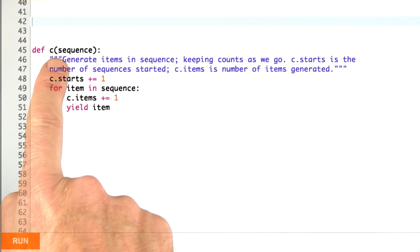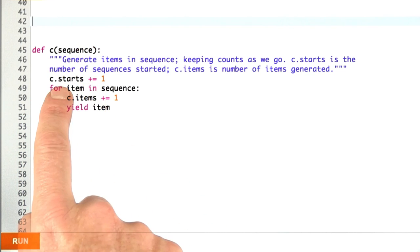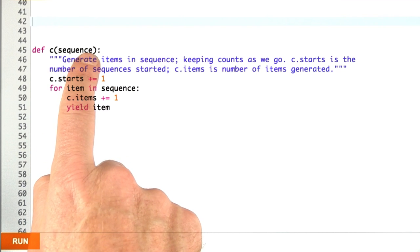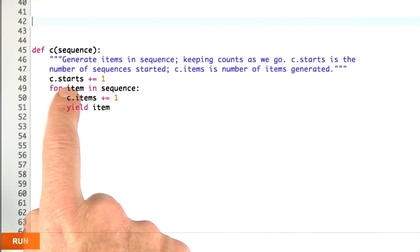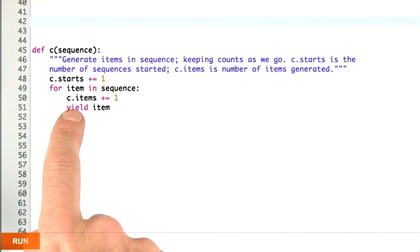We're finally ready to define this c, this counting function. What it does is it takes a sequence. It says this is the first time I've been called, so I'm going to initialize my starts to 1, and then I'm going to enter into a loop, and this means that c is a generator function.